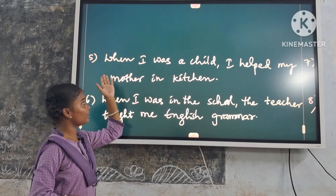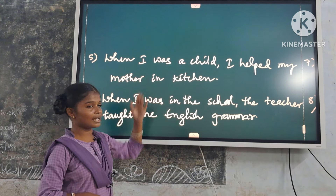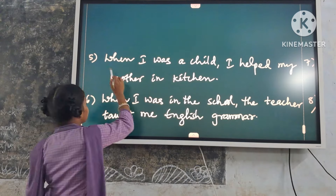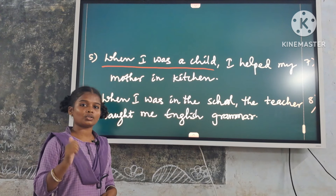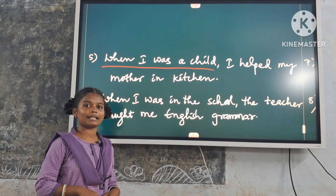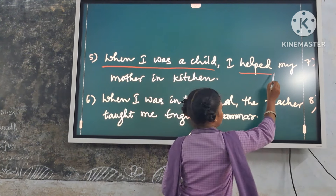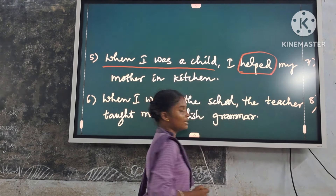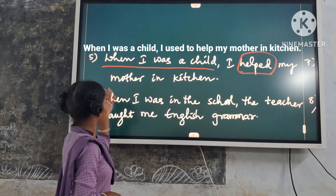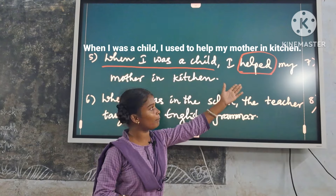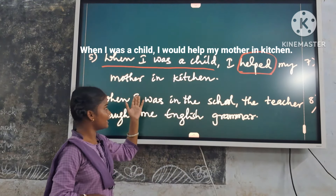Fifth example: 'When I was a child, I helped my mother in the kitchen.' Here, 'when I was a child' is a time expression. So we use both 'used to' and 'would'. Replace it with 'used to help' or 'would help'. Answer: 'When I was a child, I used to help my mother in the kitchen.' Or: 'When I was a child, I would help my mother in the kitchen.'